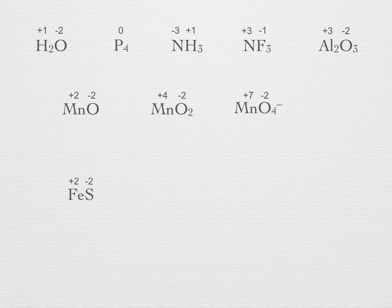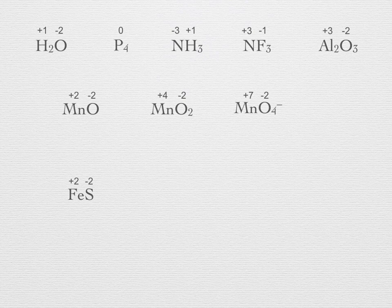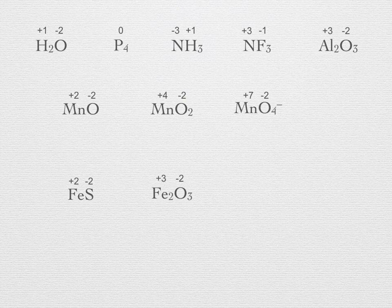FeS. Sulfur in these situations would take on an oxidation state of minus two. It has a much larger electronegativity than iron. Hence, iron must be plus two. Iron's common oxidation states are plus two or plus three. Fe2O3. The oxygen will be minus two. With the three oxygen atoms, that makes for minus six, which must be balanced by the two iron atoms. So they must be plus three in oxidation state.